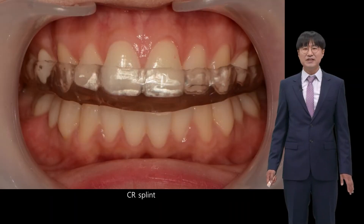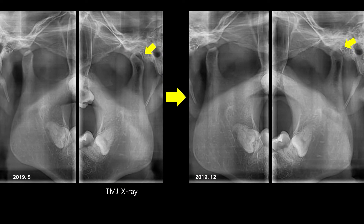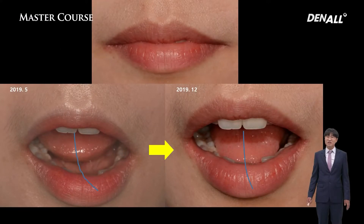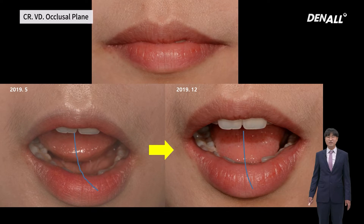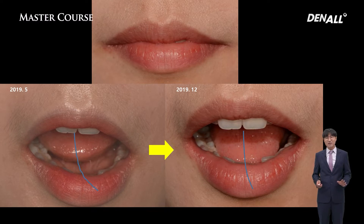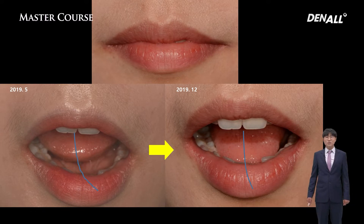A CR splint is mounted. Splint mounting and continuous occlusal adjustments were performed. After 7 months, a TMJ X-ray was taken. The left side is magnified. The left deviation is not completely resolved, but it is improved. The patient was relieved from acute pain. In this case, the treatment effect was dramatic, as it was an acute case where the pain started 3 months before with orthodontic treatment. A chronic problem would be more difficult to resolve, but acute pain like this seems easier to resolve.